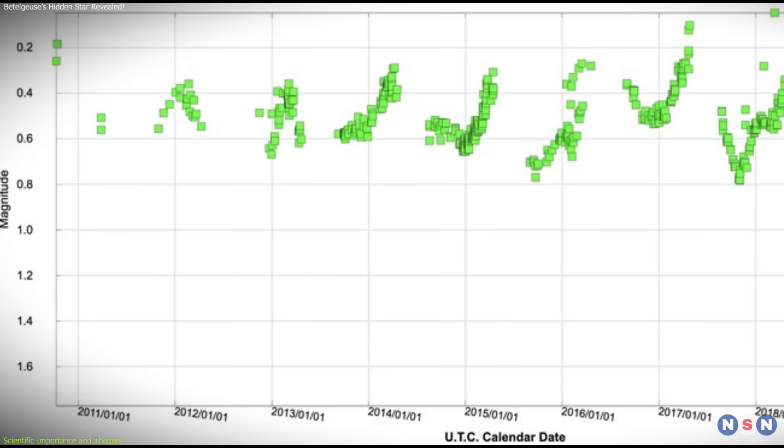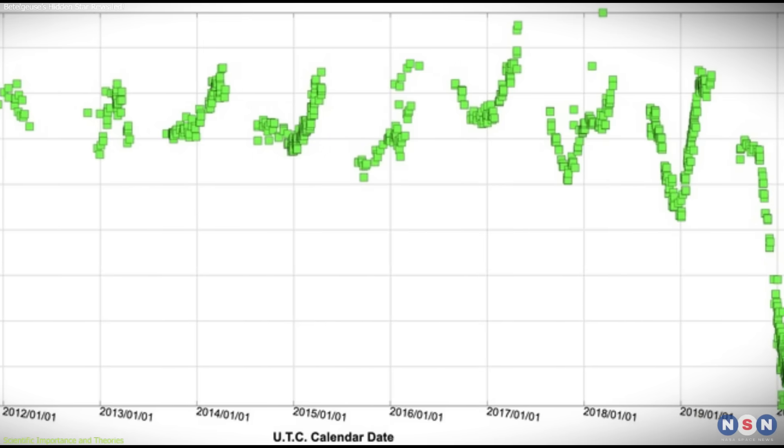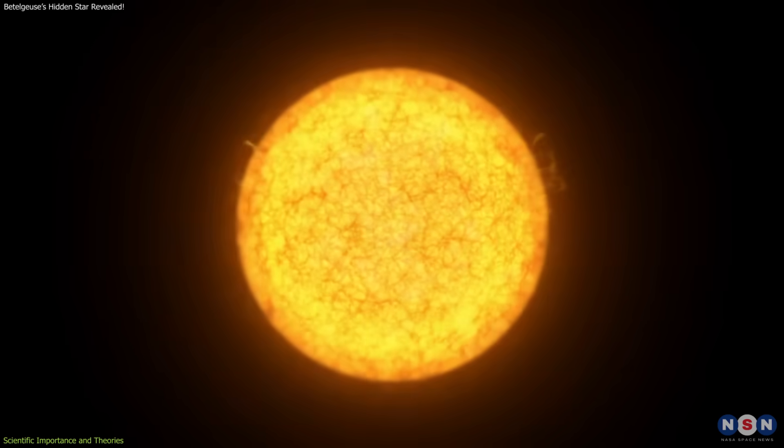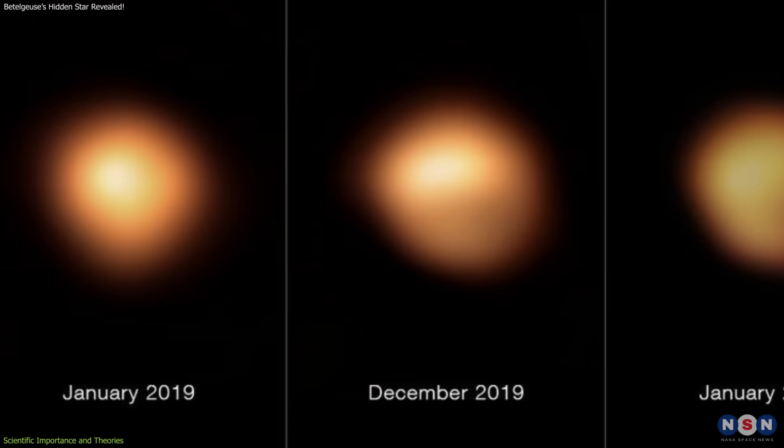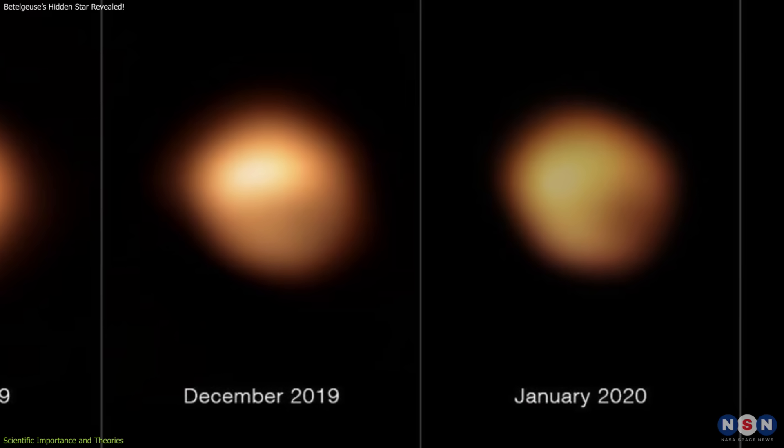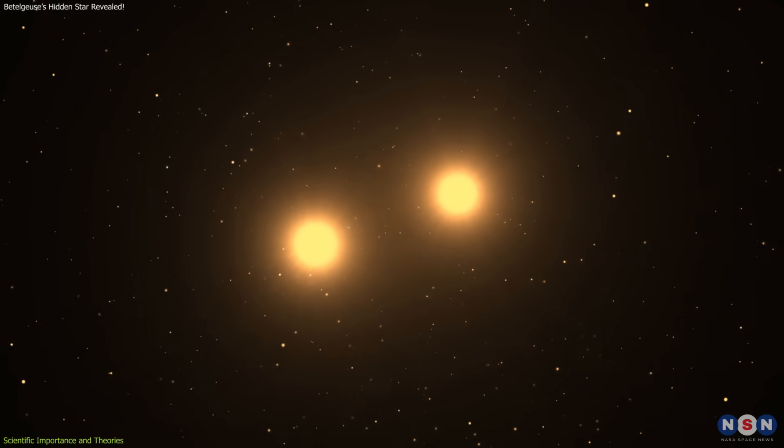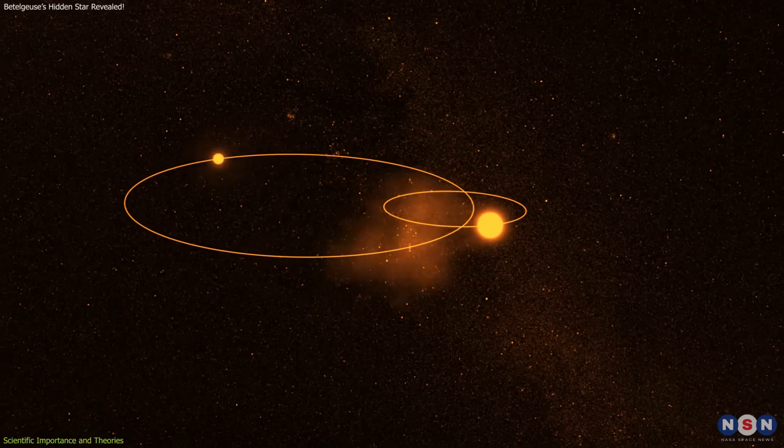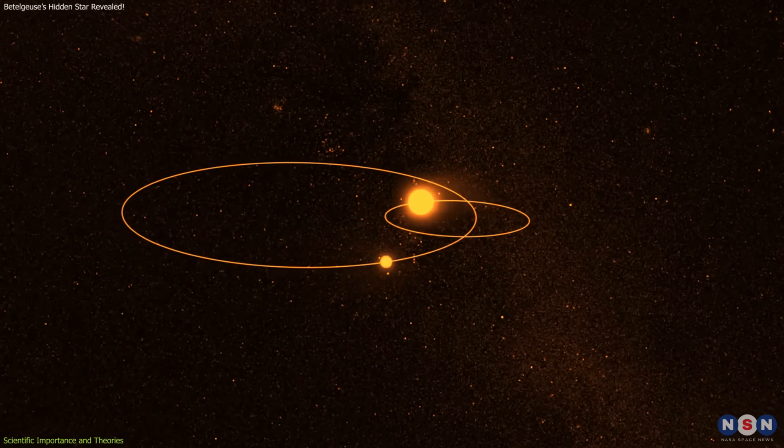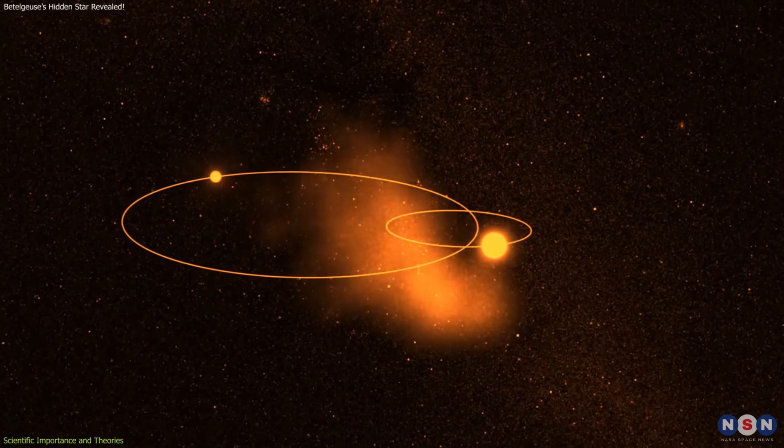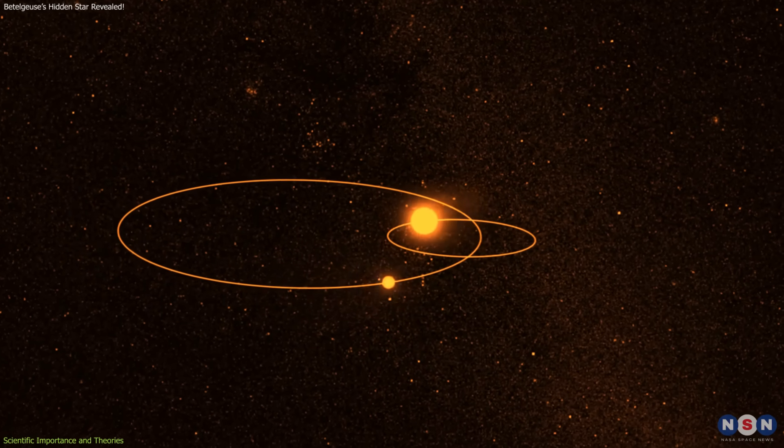If the detection is confirmed, it answers a long-standing question: What drives Betelgeuse's six-year brightness cycle? Beyond its natural pulsations, the star brightens and dims in a slower rhythm that has puzzled observers. A companion star in orbit provides a natural explanation. The gravitational interaction would cause changes in the red supergiant's extended envelope, producing the observed pattern.